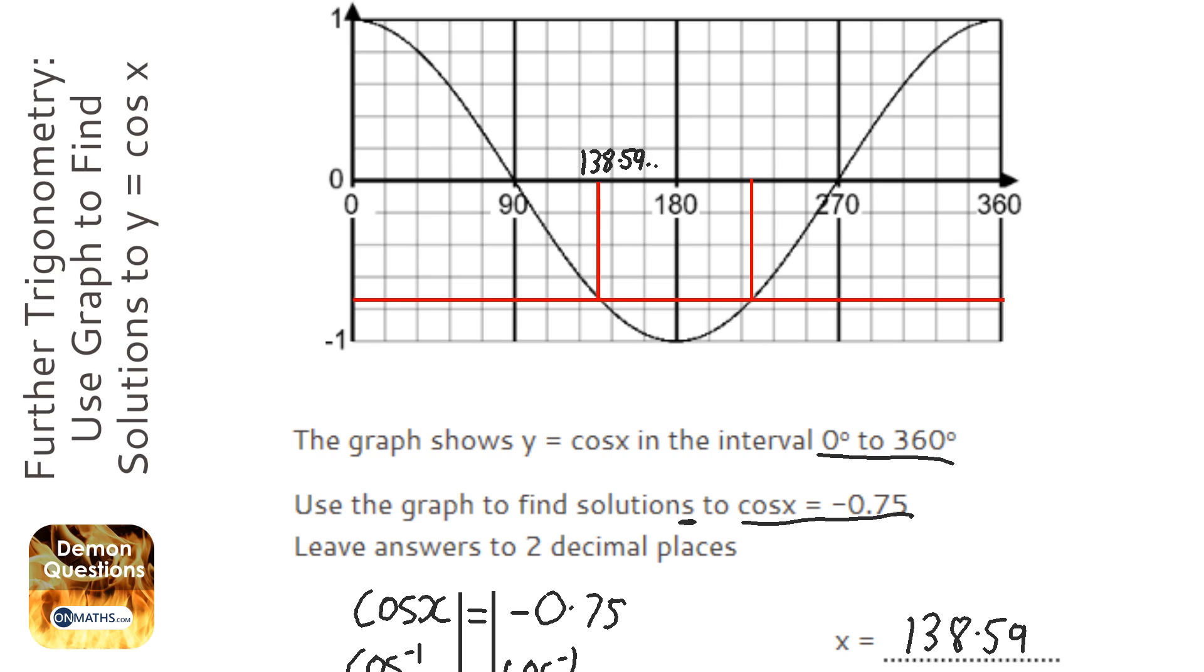Now we use the symmetry of the graph, so cos is symmetrical around 180, so what I'm going to do is work out the distance here, and then I'm just going to add it on to 180 because it's completely symmetrical. And there's other ways of doing it, but that's the way I'm going to do it.